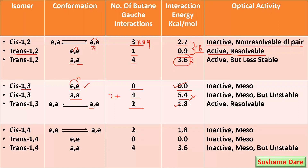The energy gap between cis-1,3 and trans-1,3 is 1.8 kcal/mol. In this case, the cis-isomer is more stable as compared to the trans-isomer by 1.8 kcal/mol. Regarding optical activity: cis-1,3-dimethylcyclohexane is optically inactive or meso — because there is a plane of symmetry. Trans-1,3-dimethylcyclohexane is optically active and has a resolvable DL pair.